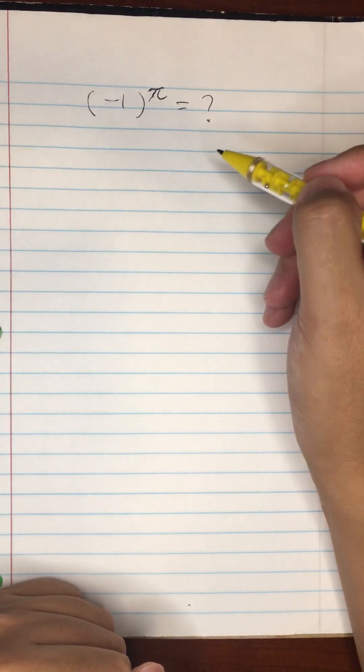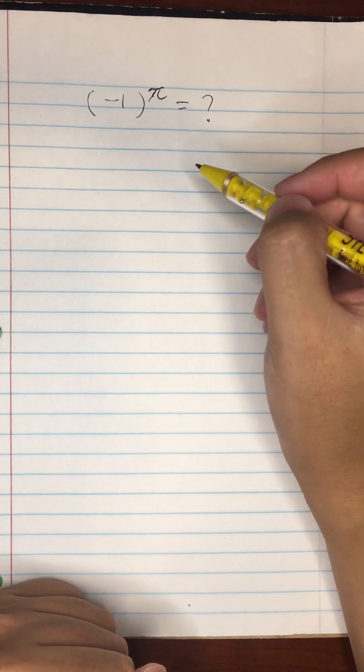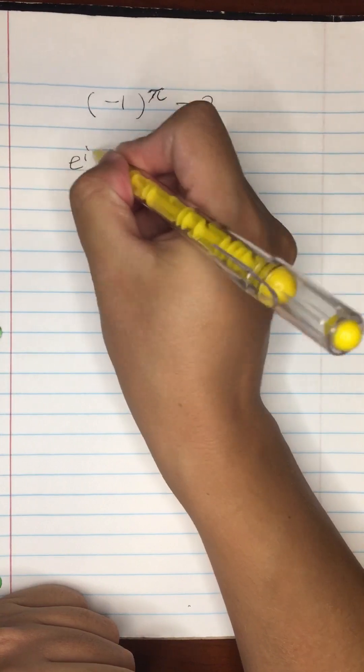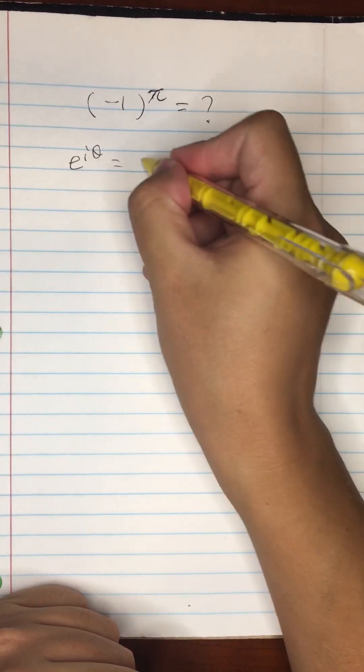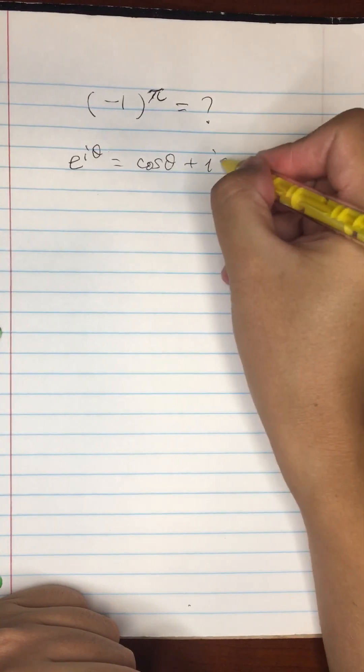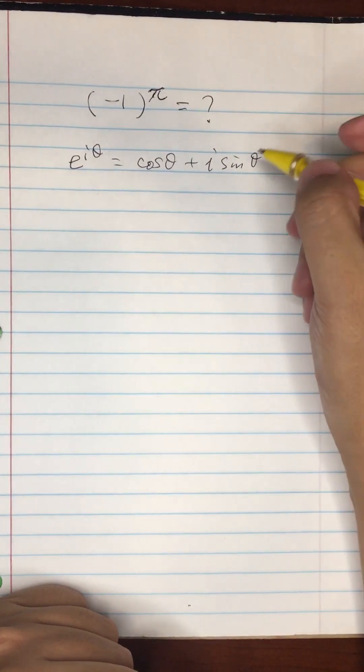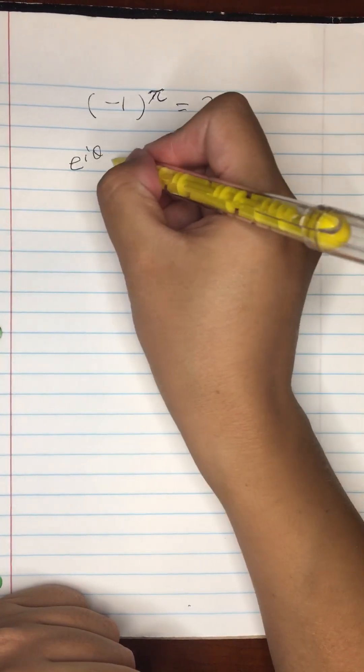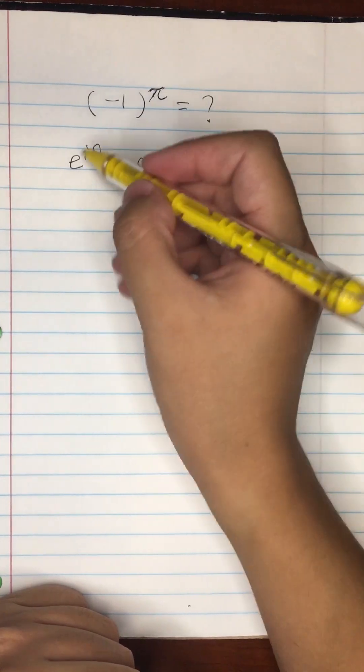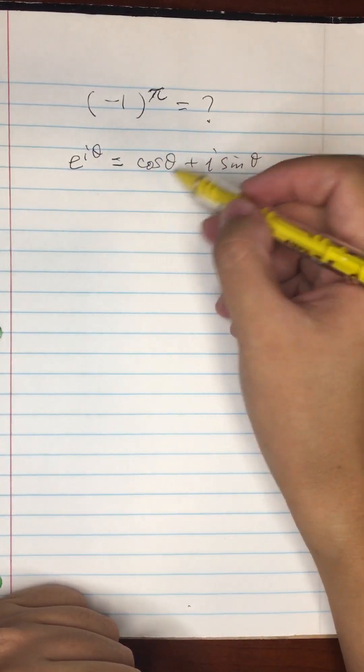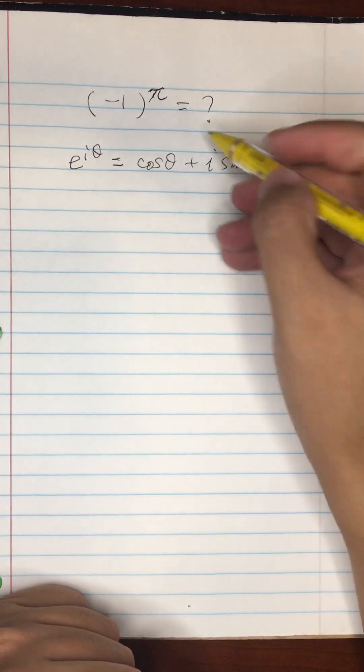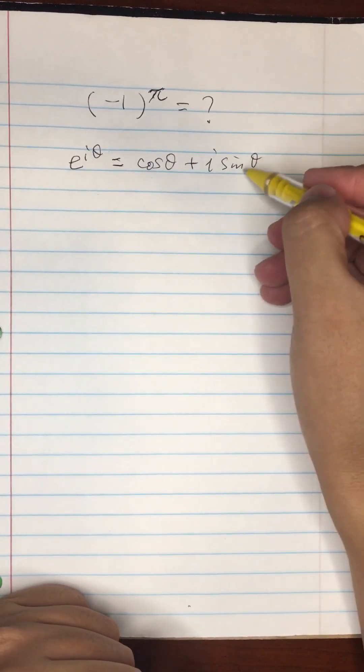We have to use Euler's formula. Euler's formula tells us that e to the i theta equals cosine theta plus i sine theta. This i is the imaginary unit. We can actually expand this kind of exponential expression into the real part and the imaginary part. The real part is going to be the cosine of the angle theta, and then the imaginary part is going to be sine theta.